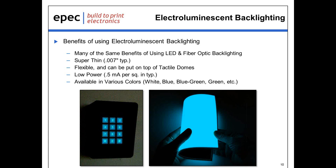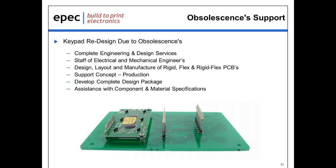Moving into obsolescence support that Epic can provide — we have full electrical and mechanical design capabilities here at Epic with a staff of electrical and mechanical engineers. We can perform design, layouts, and manufacture of rigid, flex, and rigid flex PCB technologies used in most of our assemblies. We can support any design phase from concept to production — even a napkin sketch can be taken to manufacturing. We also assist customers whose parts are no longer available, have been replaced, or who simply want to move from one technology to another, helping with material specifications and component lookup.